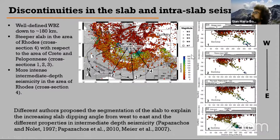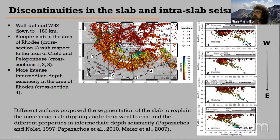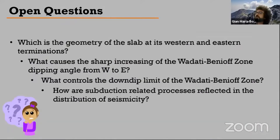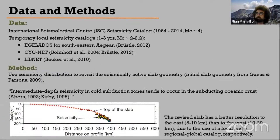Looking at cross-sections, we see a well-defined Wadati-Benioff zone down to 180–200 km depth, with a steeper slab in the Rodos area compared to the west, and much more intense intermediate-depth seismicity there. The slab is visible to 1,500 km depth in tomography while the Wadati-Benioff zone only reaches 180 km. From this, I formulate the key open questions: What is the geometry of the slab at its western and eastern terminations? What causes the sharp increase in Wadati-Benioff zone dip angle from west to east? What controls the downdip limit of the Wadati-Benioff zone? And how are subduction-related processes reflected in seismicity distribution?